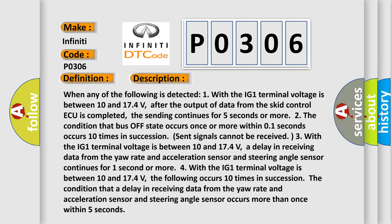When any of the following is detected: One, with the IG1 terminal voltage between 10 and 17.4 volts, after the output of data from the SKID control ECU is completed, the sending continues for 5 seconds or more. Two, the condition that bus off state occurs once or more within 0.1 seconds occurs 10 times in succession.